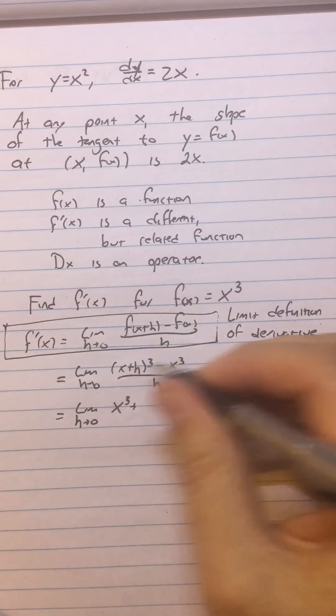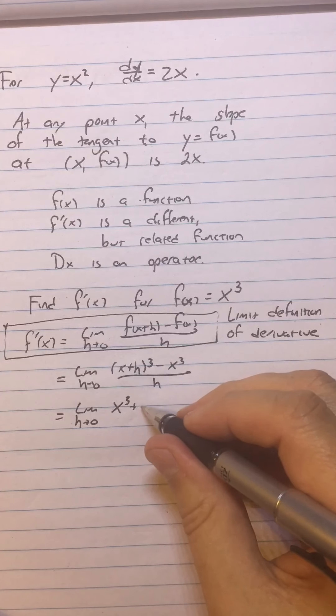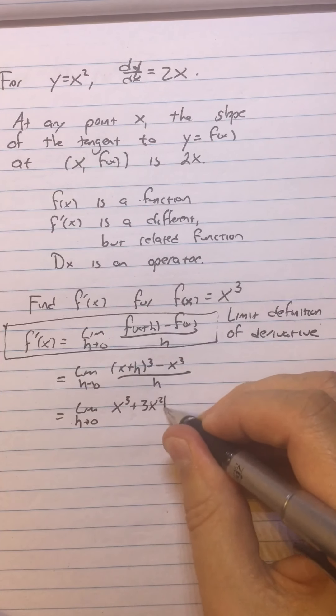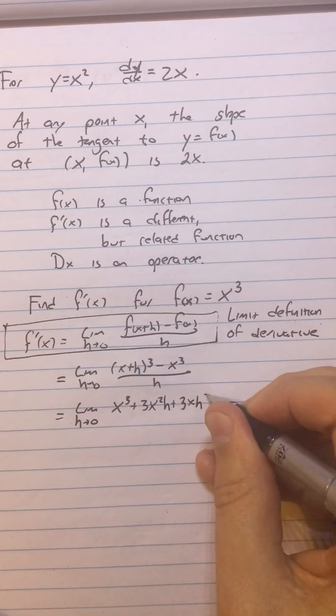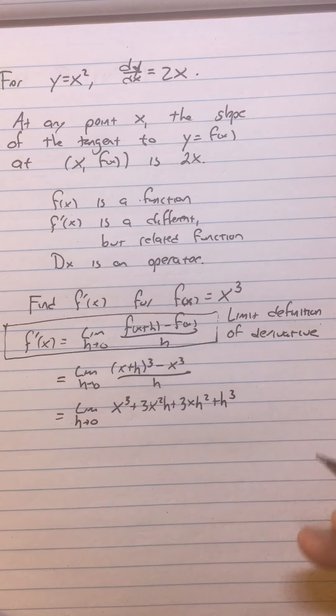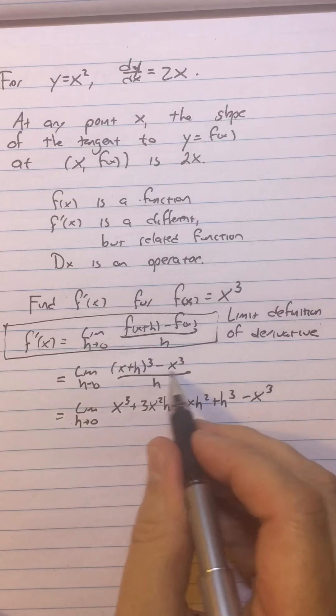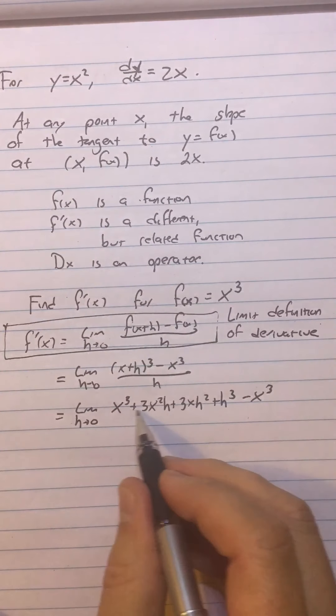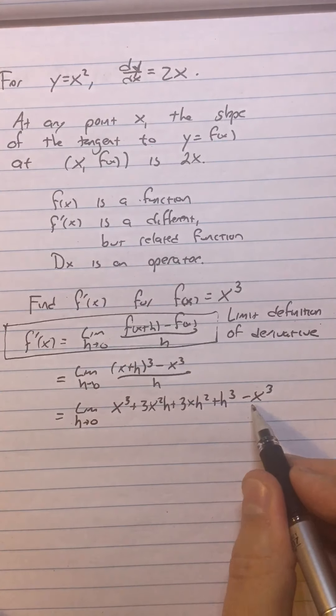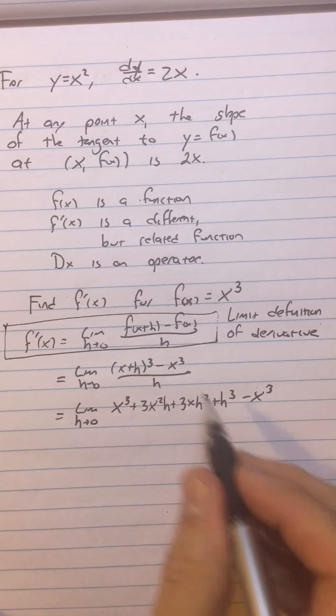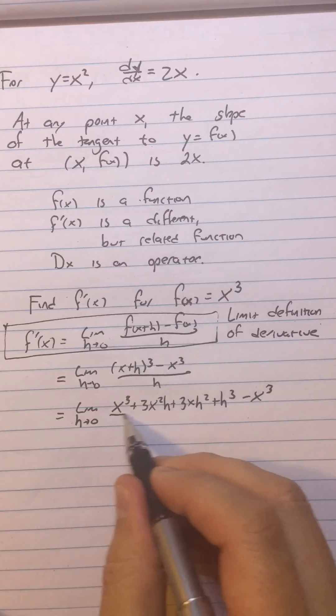So this is x cubed. Hopefully you know your Pascal's triangle. So it's going to be plus 3x squared h plus 3x h squared plus h cubed. If you're not sure where I came up with those things, send me an email and ask me. And then the minus x cubed is this minus x cubed.